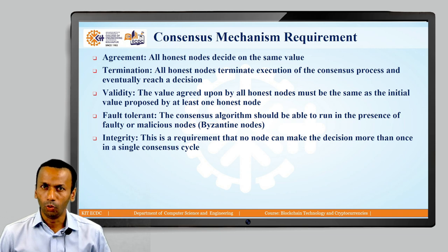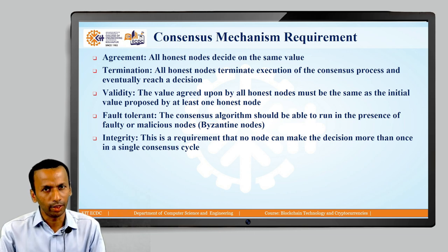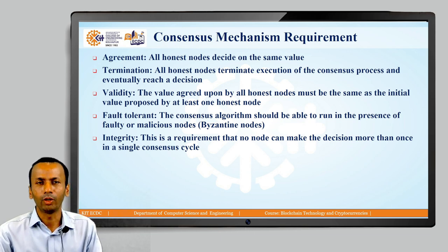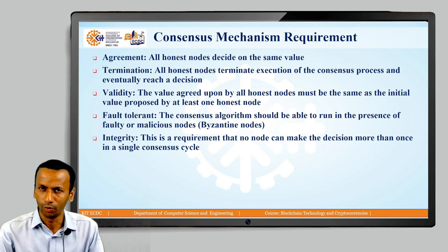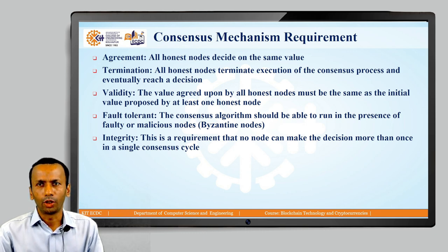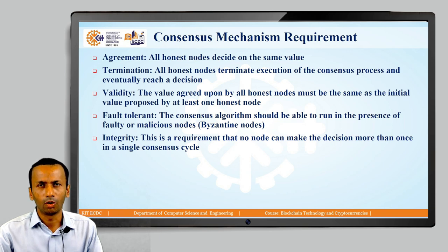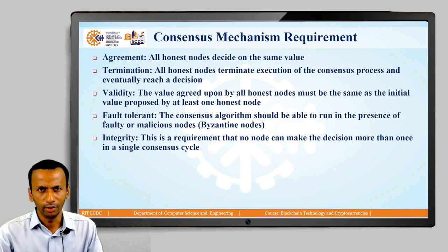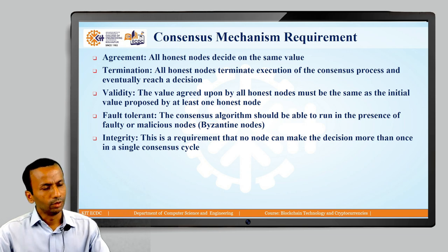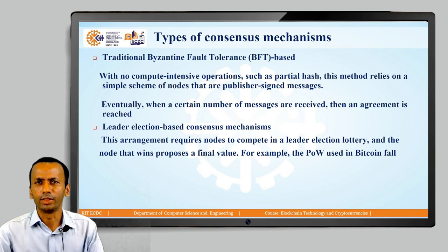The fifth requirement is Integrity — no node can make a decision more than once in a single consensus cycle. Once a decision is final and all nodes in the blockchain network have agreed, you cannot make another decision. Whenever dealing with consensus algorithms, all these requirements must be met: Agreement, Termination, Validity, Fault Tolerance, and Integrity.